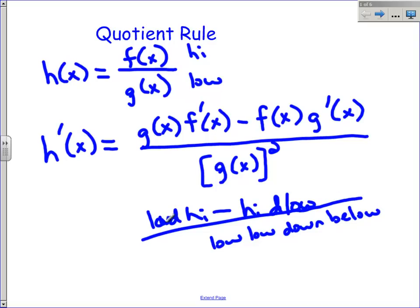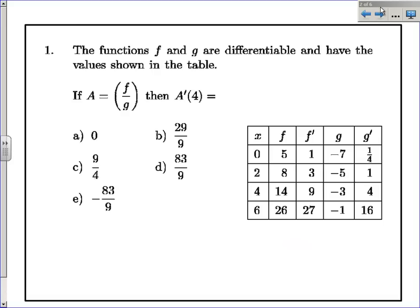So let's take a look at this again. It's low d high minus high d low over low, low down below. So that's how you remember that. Anyway, if you don't like that at all or you think that's silly, it doesn't matter. So let's go take a look at a couple of examples here.